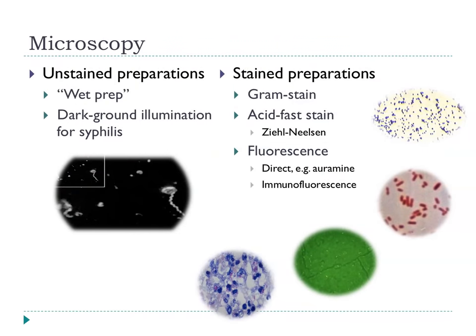For microscopy, we can look at an unstained preparation — a wet prep. Looking at urine, you can see whether there are lots of neutrophils present, indicating pus cells in the urine and inflammation in the urinary tract, likely due to infection. For syphilis, you can scrape material from the primary lesion — the chancre — suspend it in liquid and use dark ground illumination, where light is scattered upward into the microscope. You can then see spirochetes — very thin, spiral organisms swimming around very quickly — quite distinctly, without any staining required.